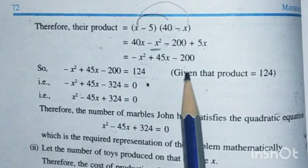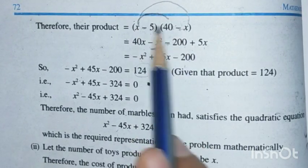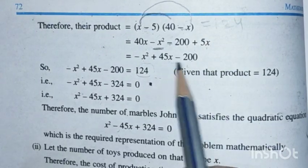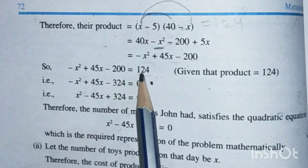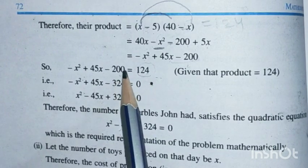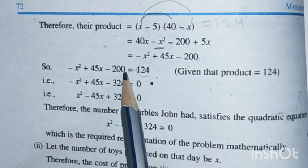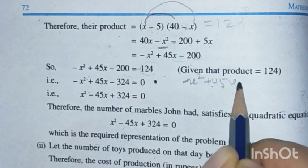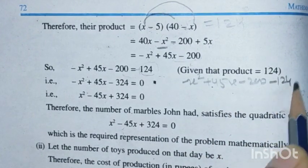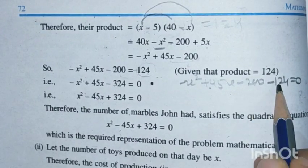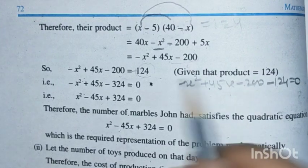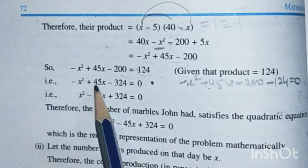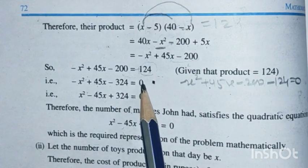We have -x² + 45x - 200 = 124. Shifting 124 to the left side: -x² + 45x - 200 - 124 = 0, giving -x² + 45x - 324 = 0. Multiplying both sides by -1 (which doesn't affect zero): x² - 45x + 324 = 0.